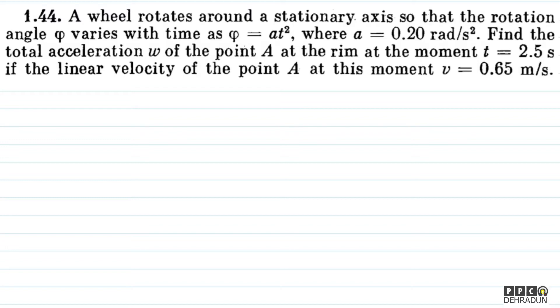The question says: a wheel rotates around a stationary axis so that the rotation angle phi varies with time as phi equals at squared, where a equals 0.2 radians per second squared. Find the total acceleration w of the point A at the rim at the moment t equals 2.5 seconds, if the linear velocity of the point A at this moment is v equals 0.65 meters per second.